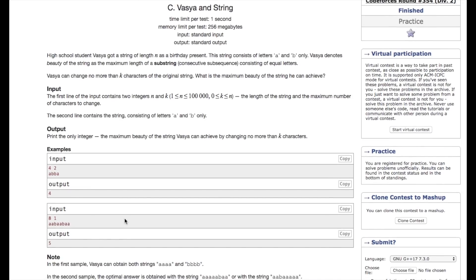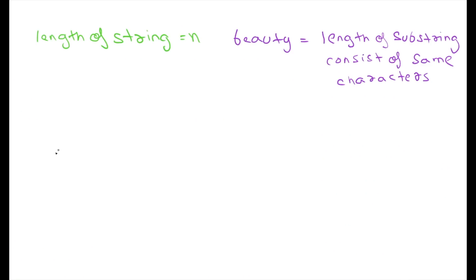This problem can easily be solved with two pointers, but let's see how we can use binary search to solve it. We are given the length of the string n, and the beauty is the length of a sub-string consisting of the same character. We have to find the maximum beauty, that is the maximum length sub-string having the same character.